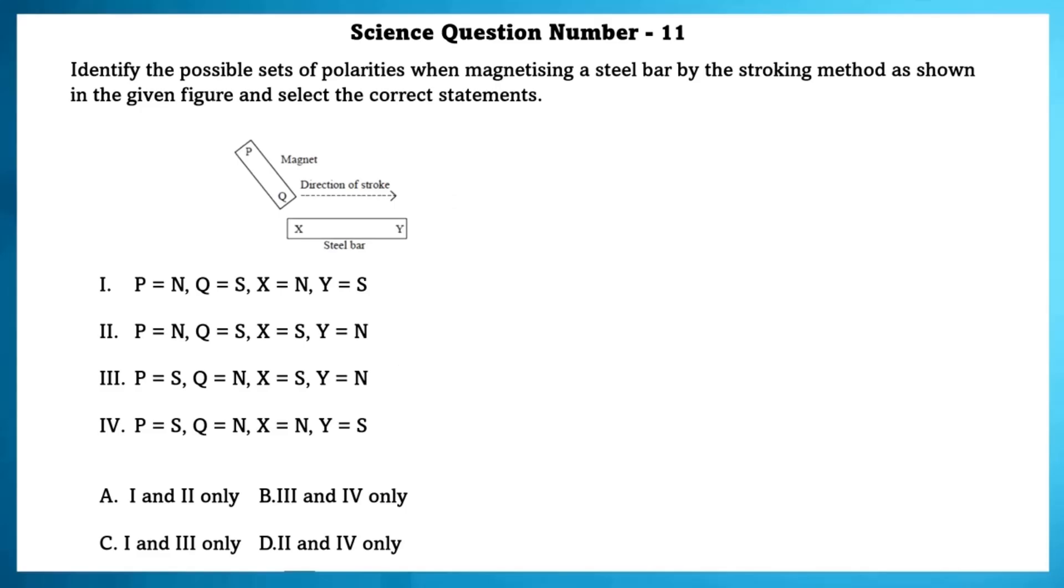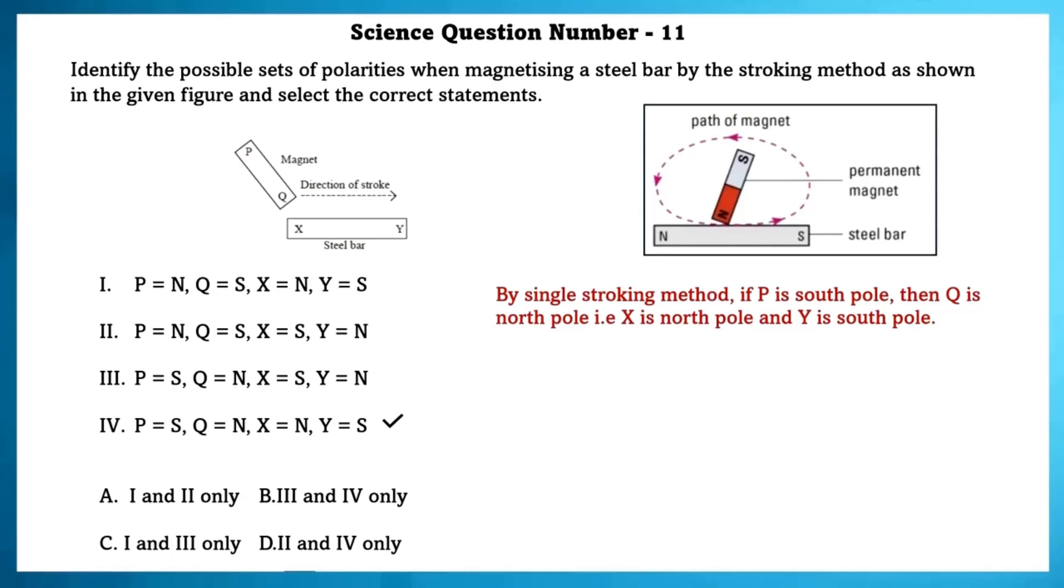Science question number 11. Identify a possible set of polarities when magnetizing a steel bar by stroking method as shown in the given figure and select the correct statements. By single stroking method, if P is south pole, then Q is north pole, then X is north pole, and Y is south pole. Or, if P is north pole, then Q is south pole, and X is south pole, and Y is north pole. So, the polarities can be second and fourth option.